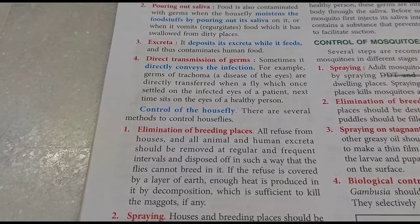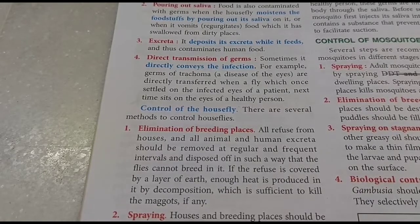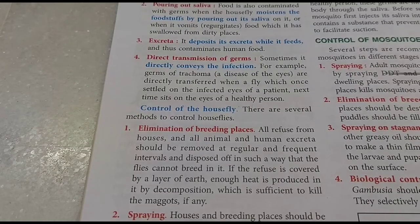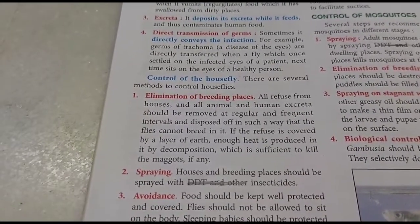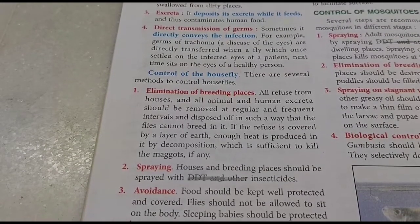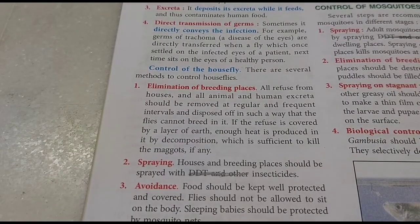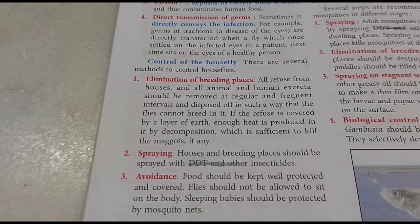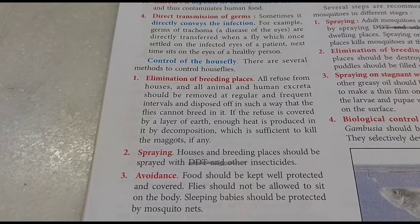First, eliminate all breeding places - animal and human excreta should be removed regularly and buried in the earth, where the heat from decomposition kills the maggots (larvae) of houseflies. Second, spray insecticides on breeding places - DDT is no longer used because it causes pollution, enters the food chain, and harms human health. Third, avoidance - keep food well protected and covered, and cover sleeping babies with nets.